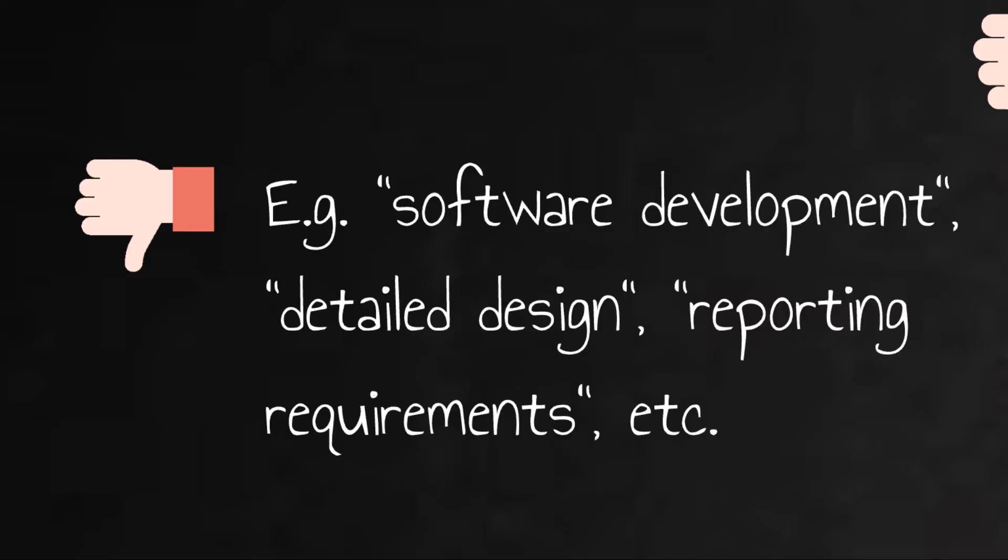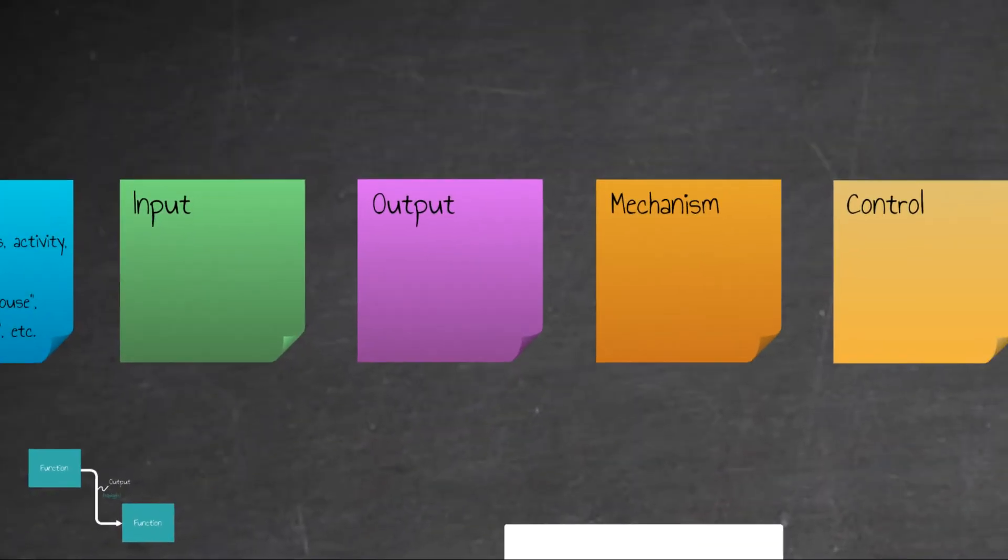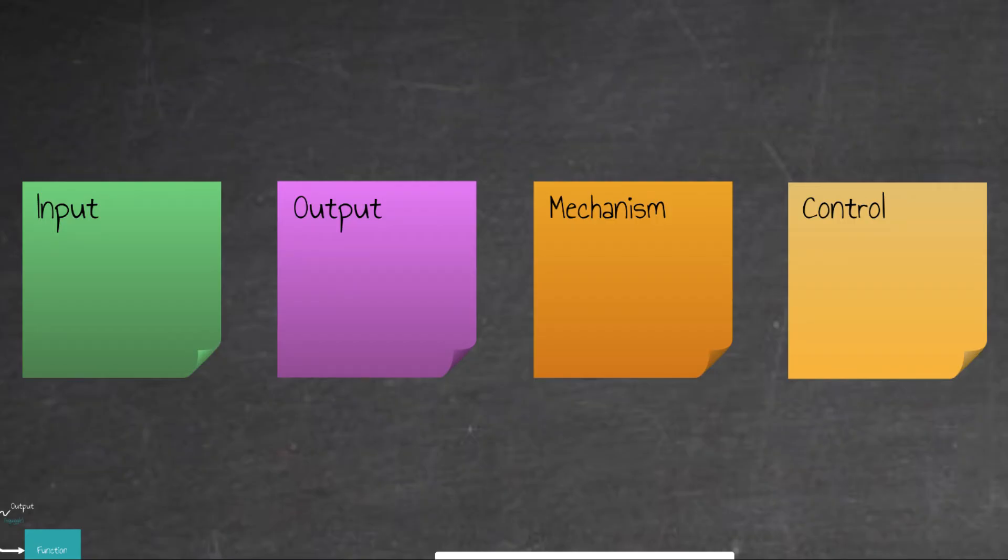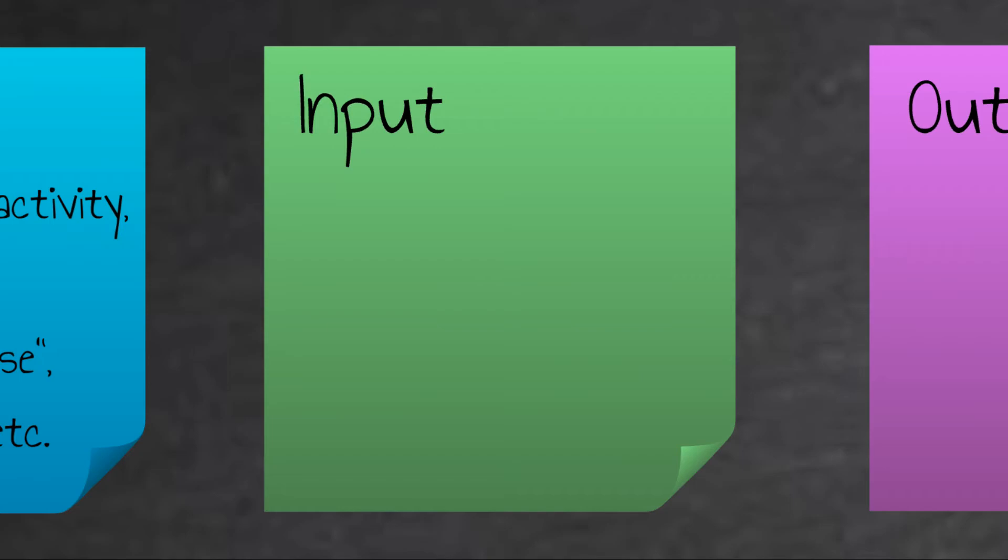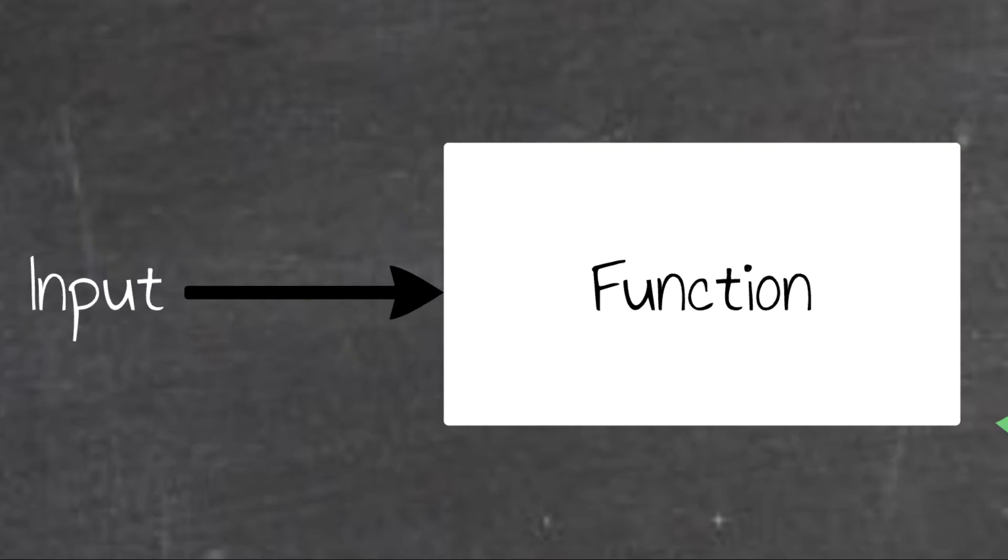Quite early on we mentioned the terms input, output, mechanism, and control, but we didn't really say what these concepts are, so let's elaborate on this a little. An input can be regarded as a piece of data or information or material flow into a function. It is captured as an arrow with its directionality going into the function, and with a bit of text describing what the input means.